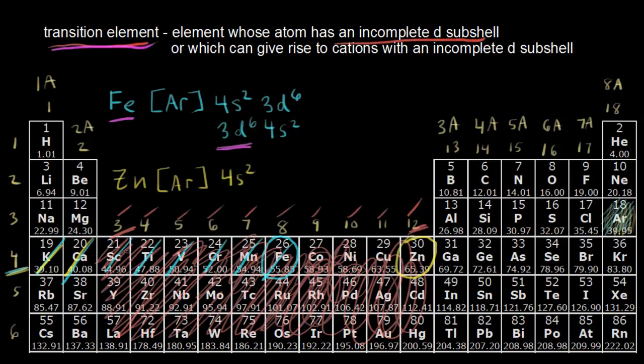And then I count over for my d electrons. One, two, three, four, five, six, seven, eight, nine, and 10. So it would be 3d10.